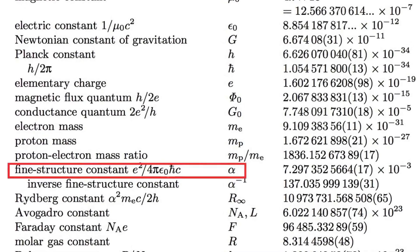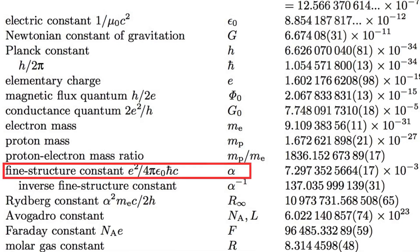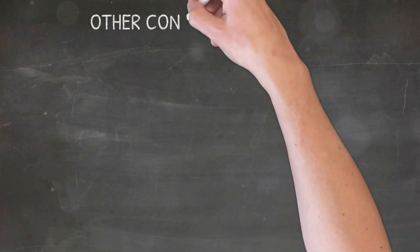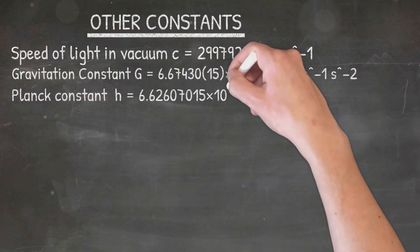The fine structure constant, represented by the Greek letter alpha, is often seen as just another one of the many constants of nature that govern our physical laws, similar to the speed of light, the gravitational constant, Planck's constant, and the mass of an electron.